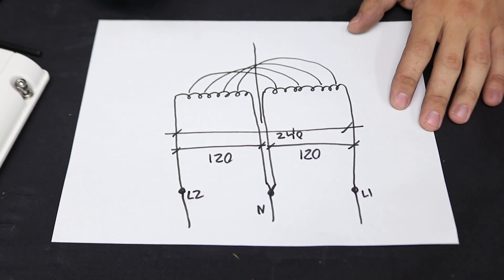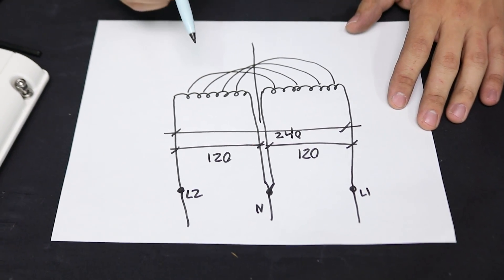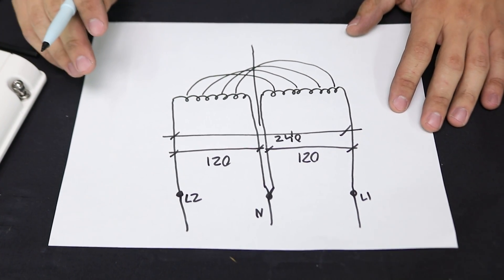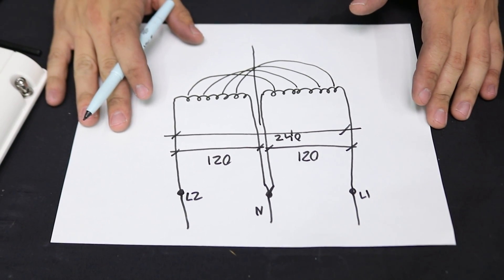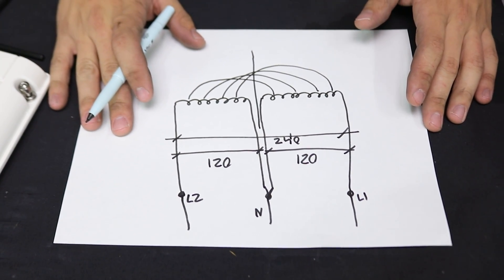So now if we wanted to get 240 volts out, we would simply draw off of L1 and L2. Enough with the diagram, let's get back to the transformer and hook it up for a test and I'll show you guys how this works.